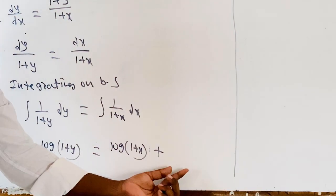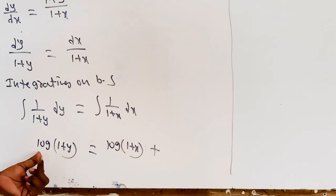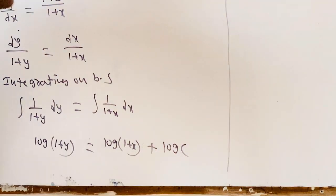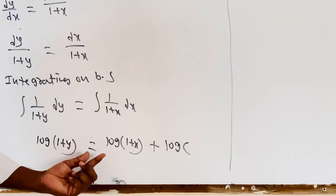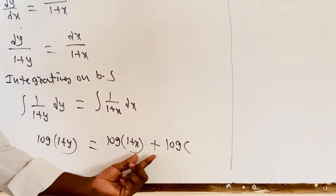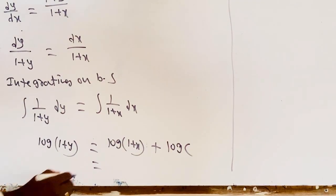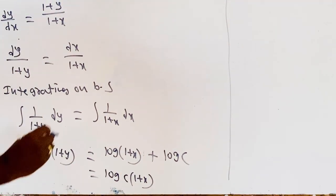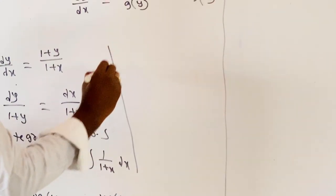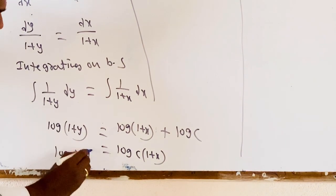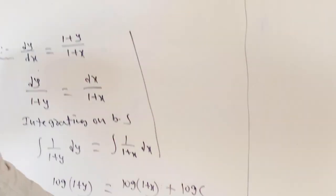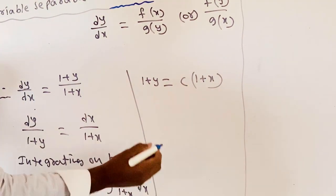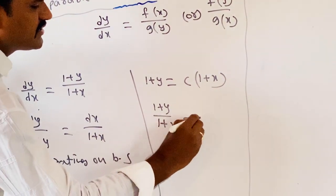Since the solution contains two log values, we keep the constant as log c. So we have log(1+y) = log(1+x) + log c. Using logarithmic formulas, this becomes log(1+y) = log c(1+x). Removing the log, we get 1+y = c(1+x), or equivalently (1+y)/(1+x) = c.